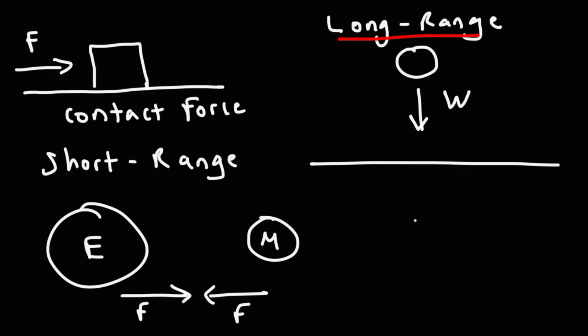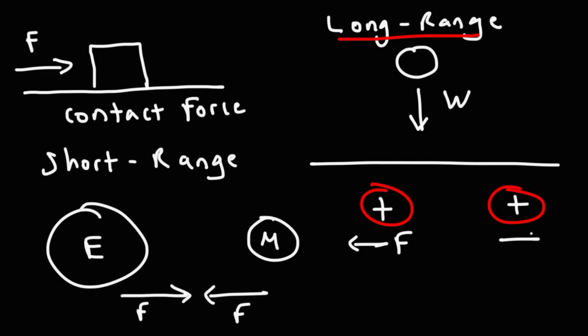Here's another example of a long-range force. Let's say if you have two positive charges next to each other but they're not touching. Like charges repel each other — so this is an electrostatic force. As you can see, it's a non-contact force. The two positive charges don't need to be touching each other, and they could still exert a force on each other even from a distance. So that's a long-range force.